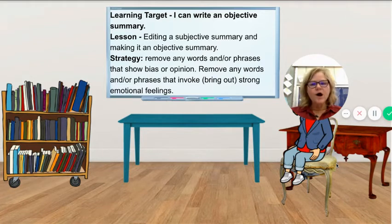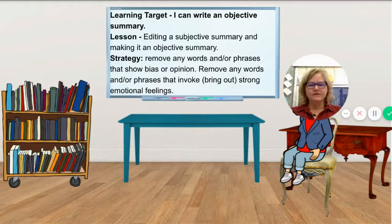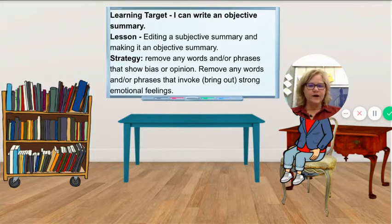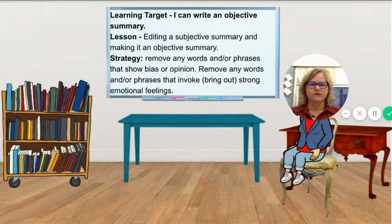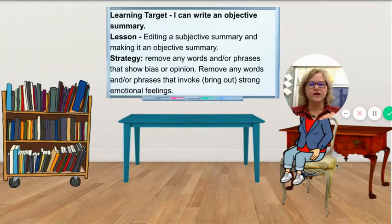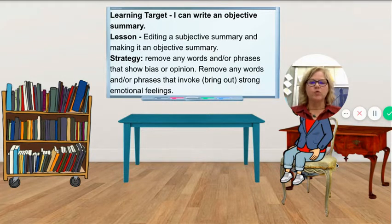Good morning everyone! Welcome to English 9 on Tuesday. Today's learning target is: I can write an objective summary. The lesson we're going to be working on is editing a subjective summary and making it an objective summary. The strategy we're going to use is removing any words and or phrases that show bias or opinion. You're also going to remove any words or phrases that invoke or bring out strong emotional feelings.